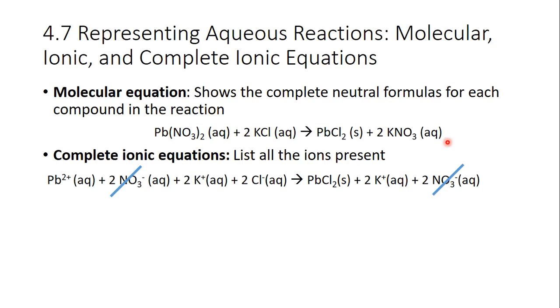Now, the next thing you have to do is you have to check are there any ions that are the same on both sides of the equation. That is what this blue line is showing. We have two nitrates on the left side as reactants and two nitrates on the right side as our products.